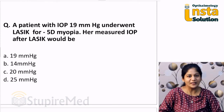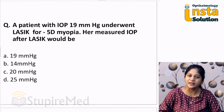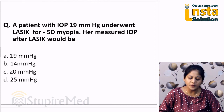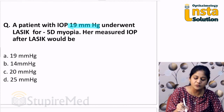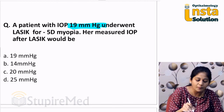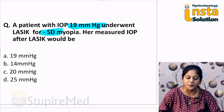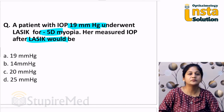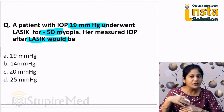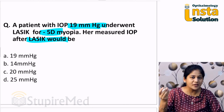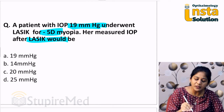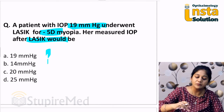Hello dear students, welcome to Insta Solution question number 9. Today we have a mathematical type of question. A patient with IOP of 19 mmHg underwent LASIK for minus 5 diopters of myopia. What would be the measured IOP after LASIK? When the patient comes back and I check intraocular pressure with a Goldman Applanation Tonometer, will the IOP be 19, or will the measured IOP be higher or lower?